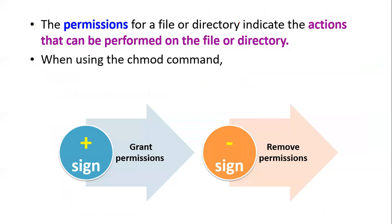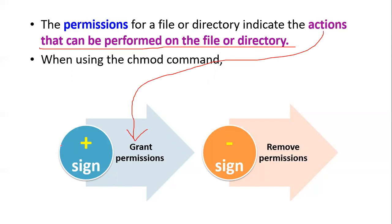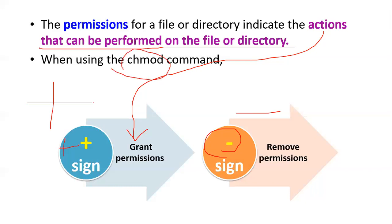Permission for a file or directory indicates the actions that can be performed on it. To grant permission you use the plus sign, and to revoke or remove permission you use the minus sign. These two symbols — plus and minus — are used when working with the chmod command.